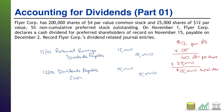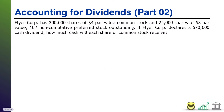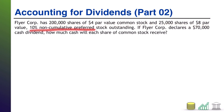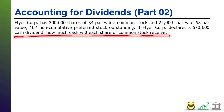And those are all the journal entries we need for this example. All right, here we go with part two. FlyerCore has 200,000 shares of $4 par value common stock and 25,000 shares of $8 par value, 10% non-cumulative preferred stock outstanding. If FlyerCore declares a $70,000 cash dividend, how much cash will each share of common stock receive? Take a moment, pause the video, see if you can do this one on your own. When you're ready, come on back.